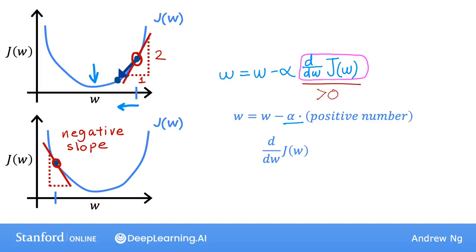So the slope is negative 2 divided by 1, which is negative 2, which is a negative number.